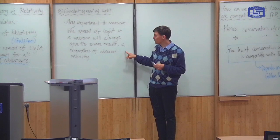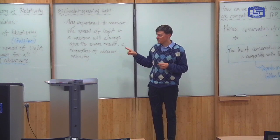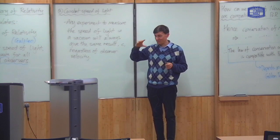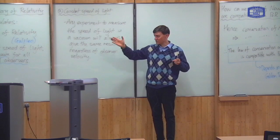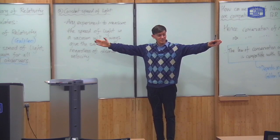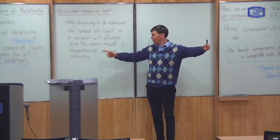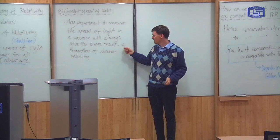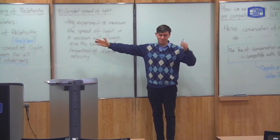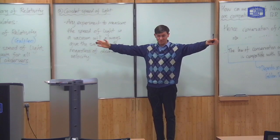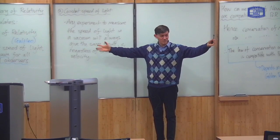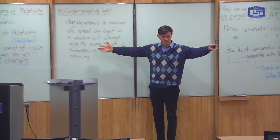Note that this principle immediately explains the result of the Michelson-Morley experiment, because the Michelson-Morley experiment was basically measuring the difference in the speed of light in different directions. But according to this postulate, the speed of light is always the same, so there's no difference in the speed of light between different directions. Therefore the Michelson-Morley experiment will always give you zero — no difference.